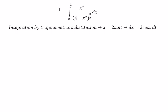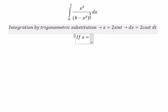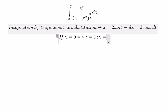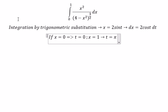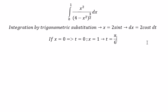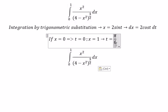Next we need to change the bounds. If s equal to 0, then t should be 0. If s equal to 1, then t should be π/6. So we put π/6 in here.